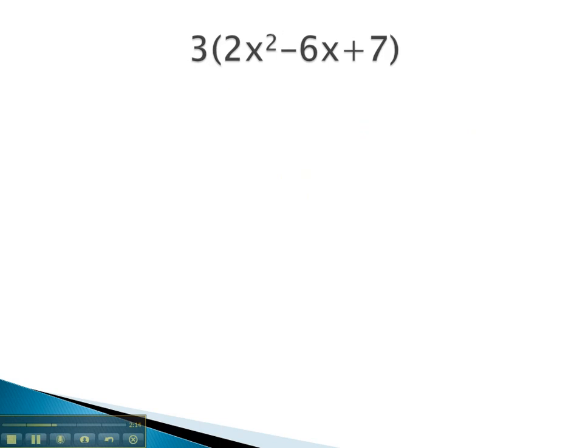In this problem, we have a 3 in front of the parentheses, so we'll start distributing or multiplying through. So, 3 times 2x squared, well 3 times 2 gives us 6 of these x squareds.